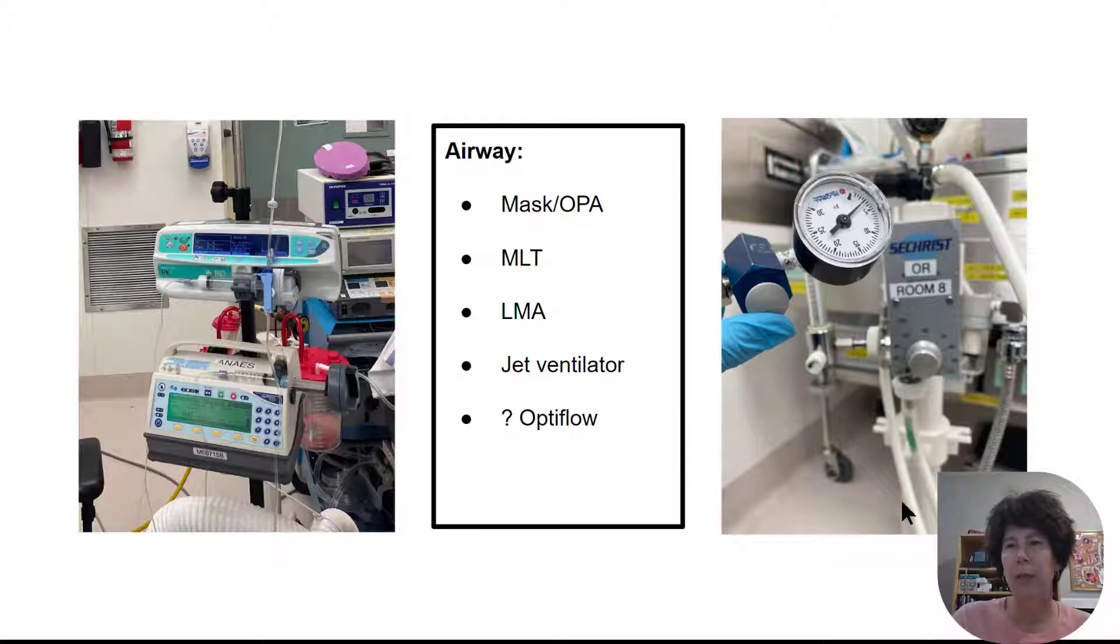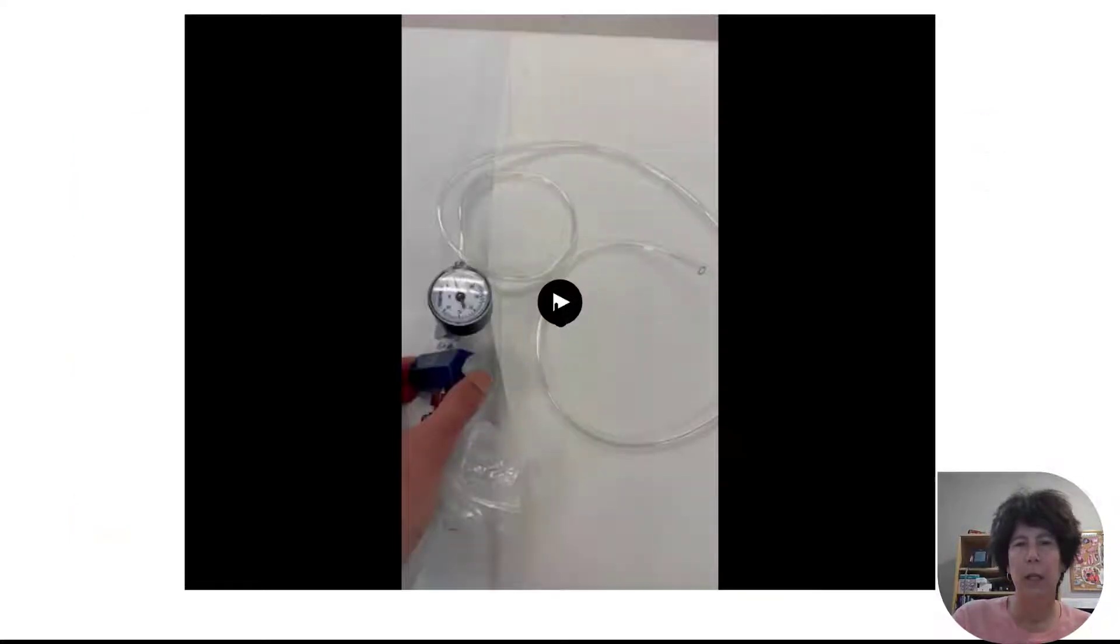Now the jet ventilator lives in that OR and there's two things that you need to know about it. There's an oxygen dial here and the oxygen is important when we do laser cases as you know. And then there is the pressure dial. When you're jetting you want to look at those pressures to make sure they don't go too high.